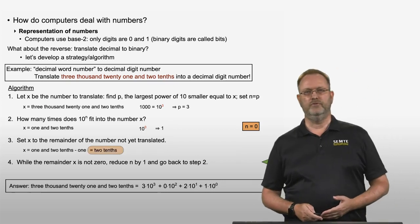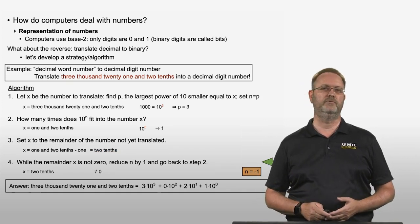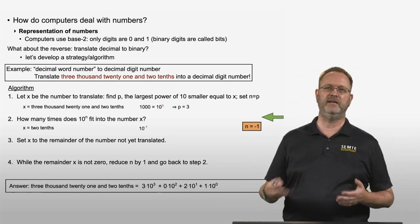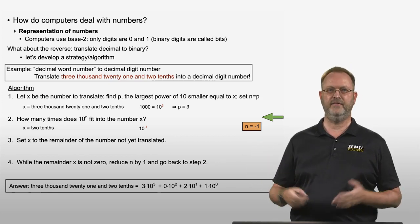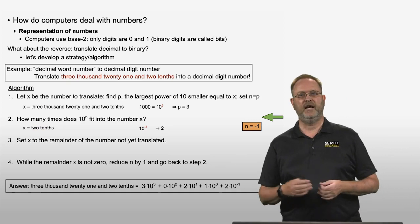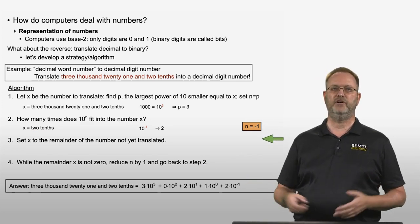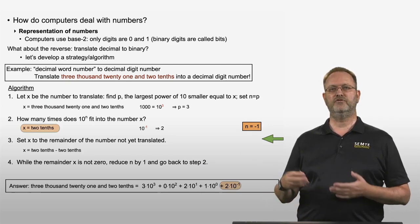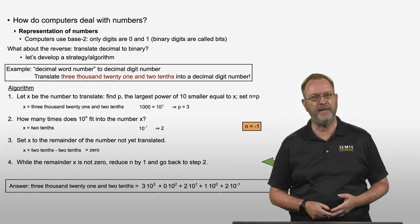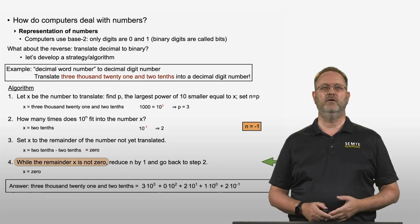Our remainder x is now 2 tenths, still not zero, so we reduce n from 0 to negative 1 and go back to step 2. Now: how many times does 10 to the power negative 1, which is 1 tenth, fit into 2 tenths? That is exactly 2 times. So we add plus 2 times 10 to the power negative 1. Step 3: x equals 2 tenths minus 2 tenths, which equals 0. The remainder is now 0, so we are done with the translation.